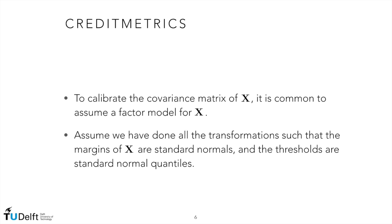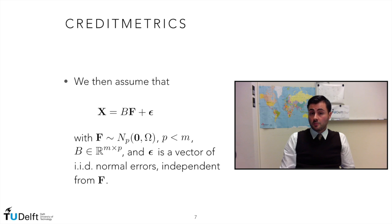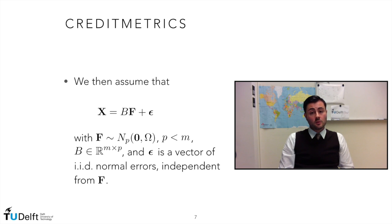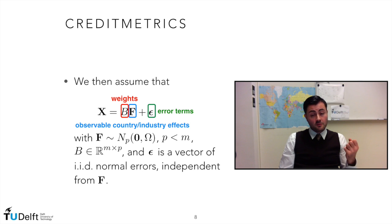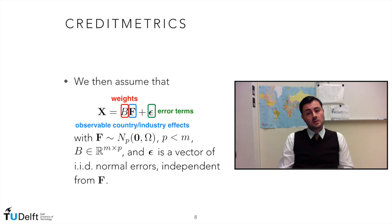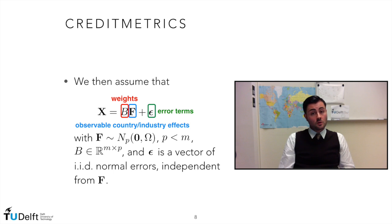To calibrate the variance-covariance matrix, credit metrics assumes a factor model for x, which is assumed to have standard normal marginals, as in the univariate case. We are assuming a factor model in which our vector x is equal to B times f plus epsilon, where B is a matrix of weights. f is a normally distributed random vector of factors, and these factors may represent systemic factors, industry factors, economic factors — essentially the joint component that the different counterparties share and that determine the value of the normalized assets.